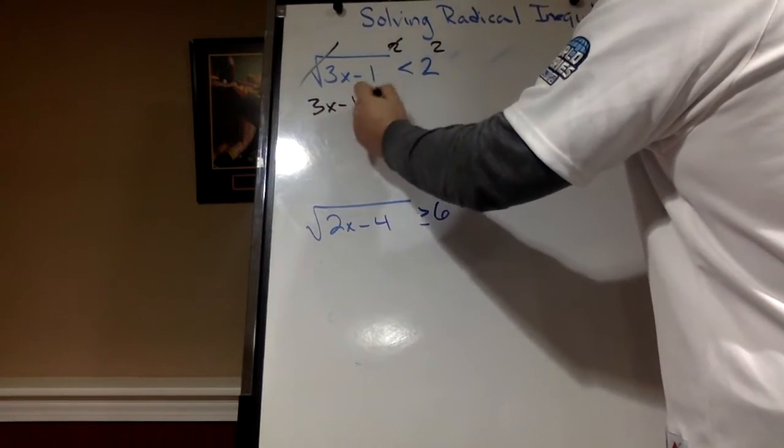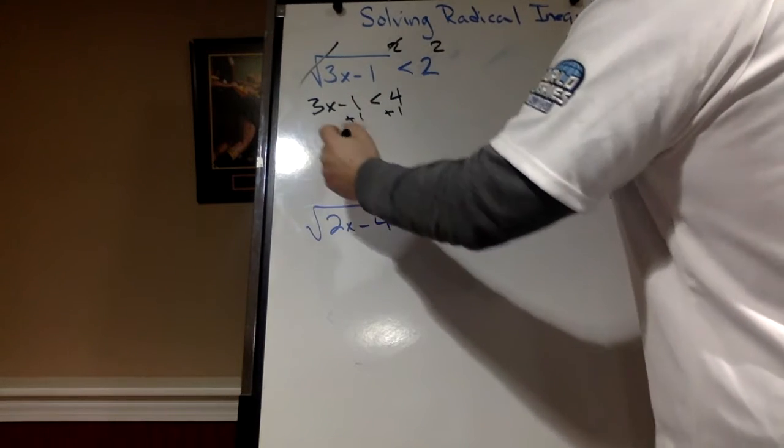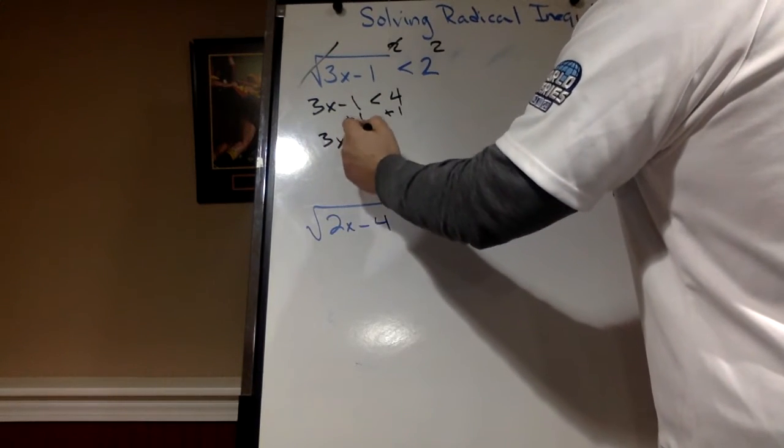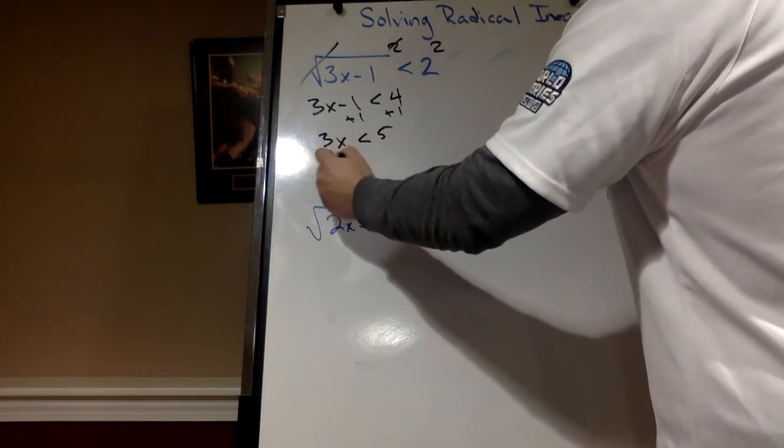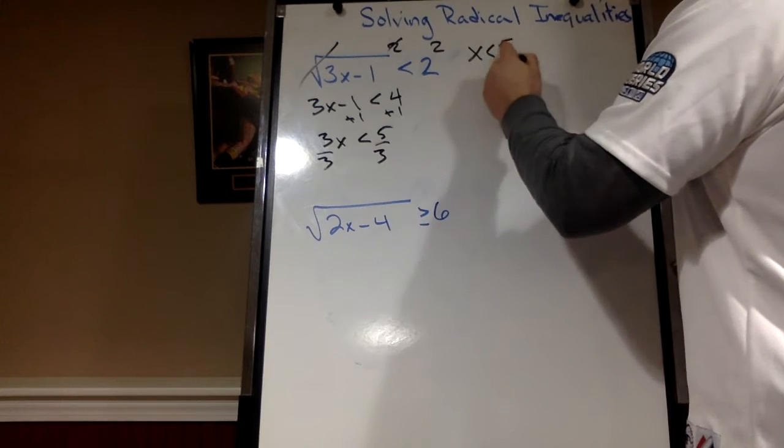3x minus 1 is less than 4. Plus 1 plus 1. So 3x is less than 5. Divide by 3. I get x is less than 5 thirds.